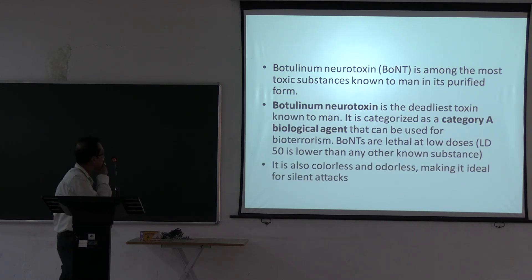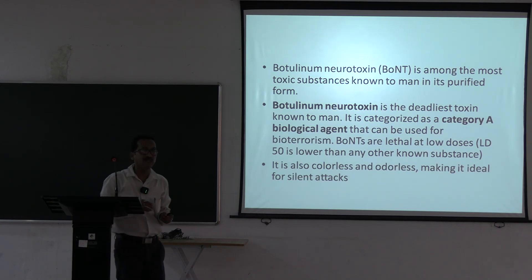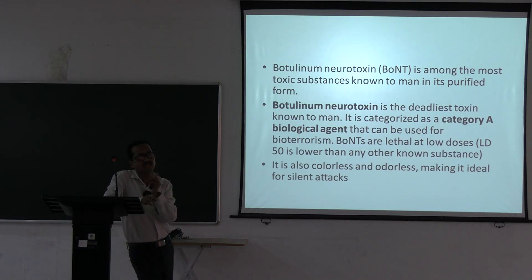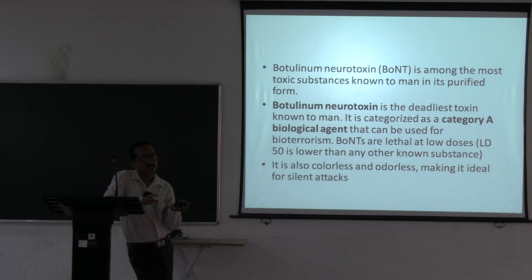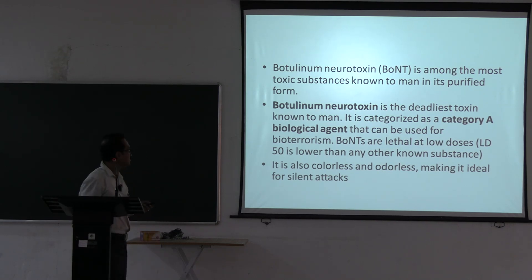Botulinum toxin from Clostridium botulinum causes flaccid paralysis. It inhibits acetylcholine release — at the presynaptic terminal in motor neurons and at the postsynaptic ganglion in sympathetic and parasympathetic systems. This prevents acetylcholine release, leading to flaccid paralysis.